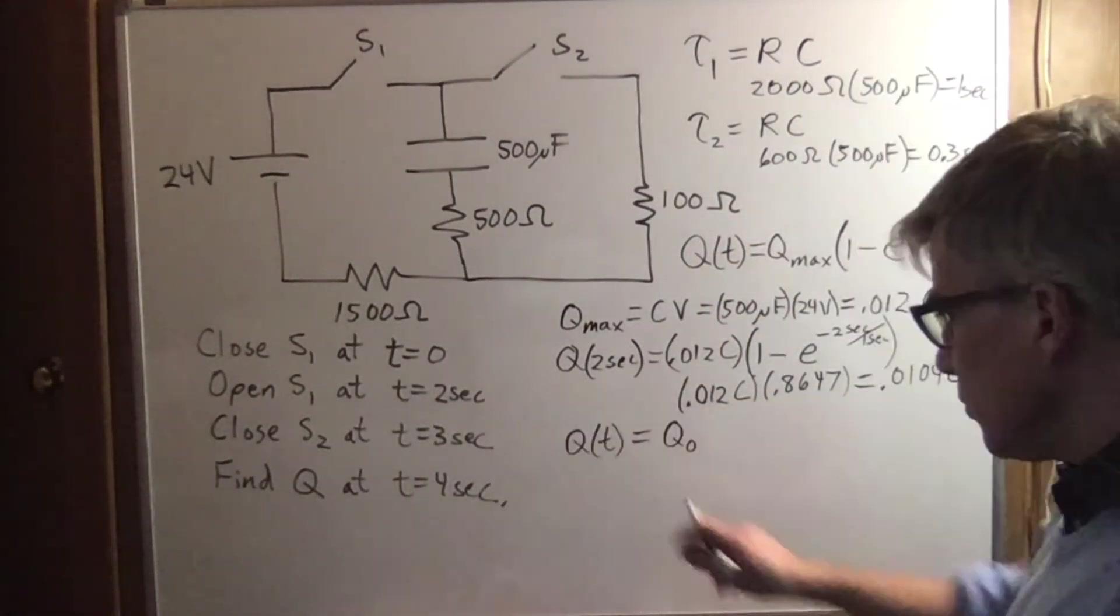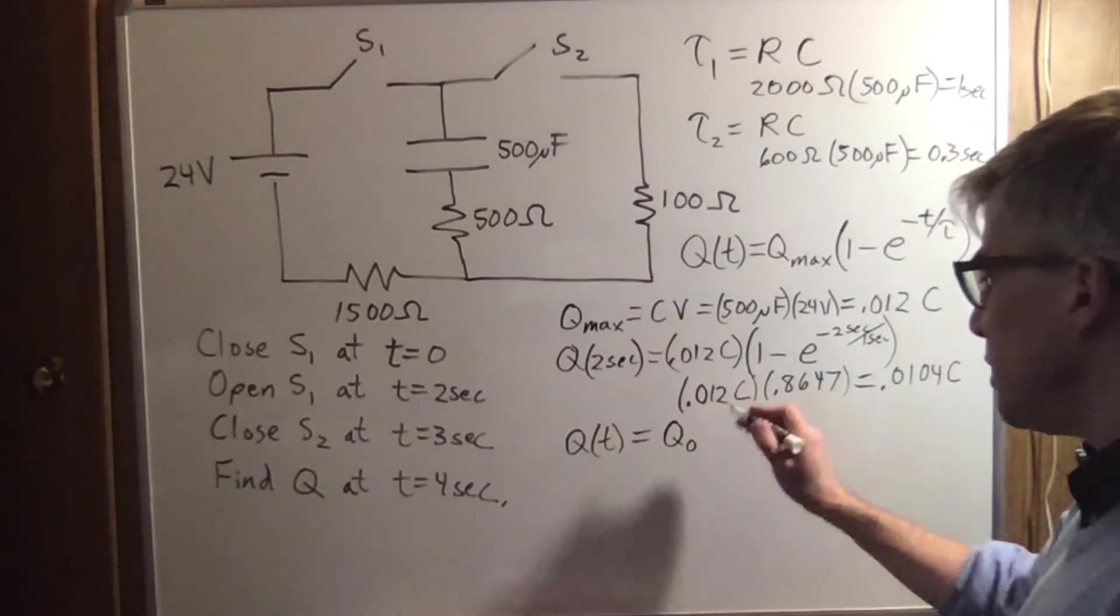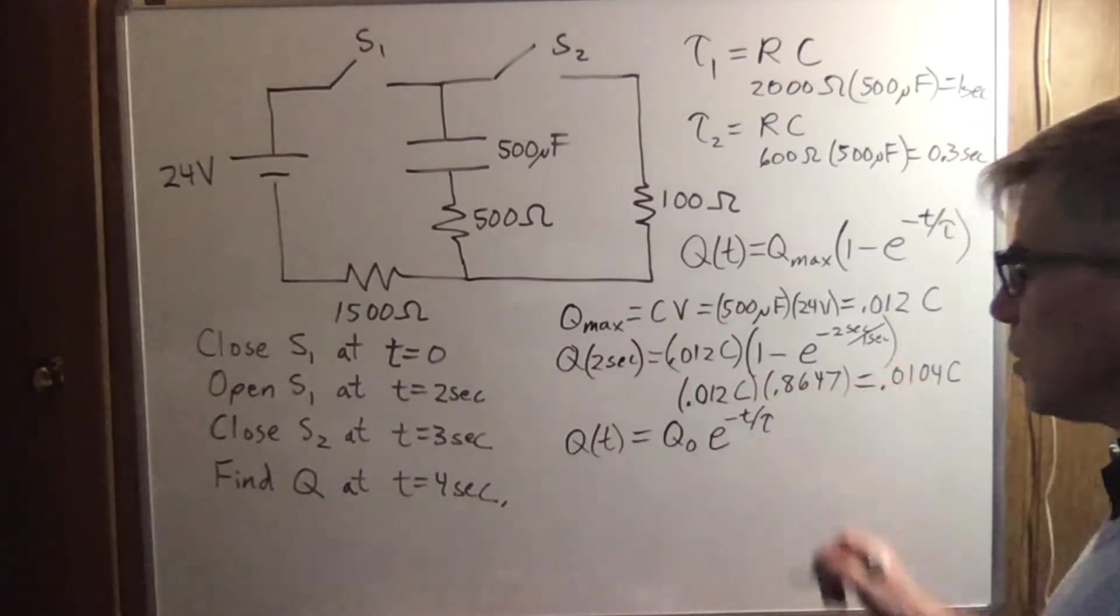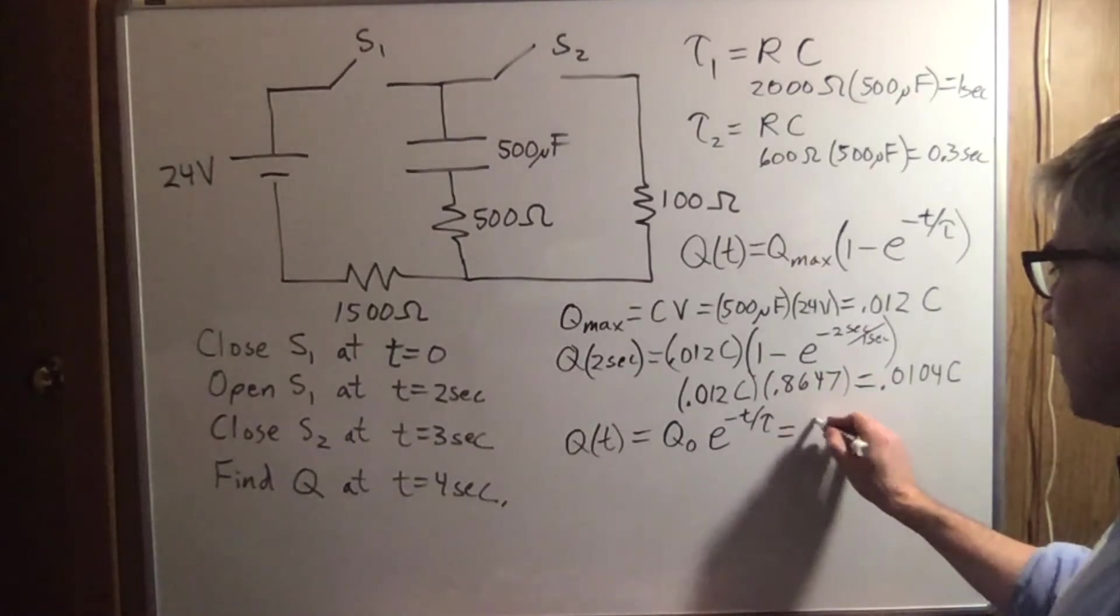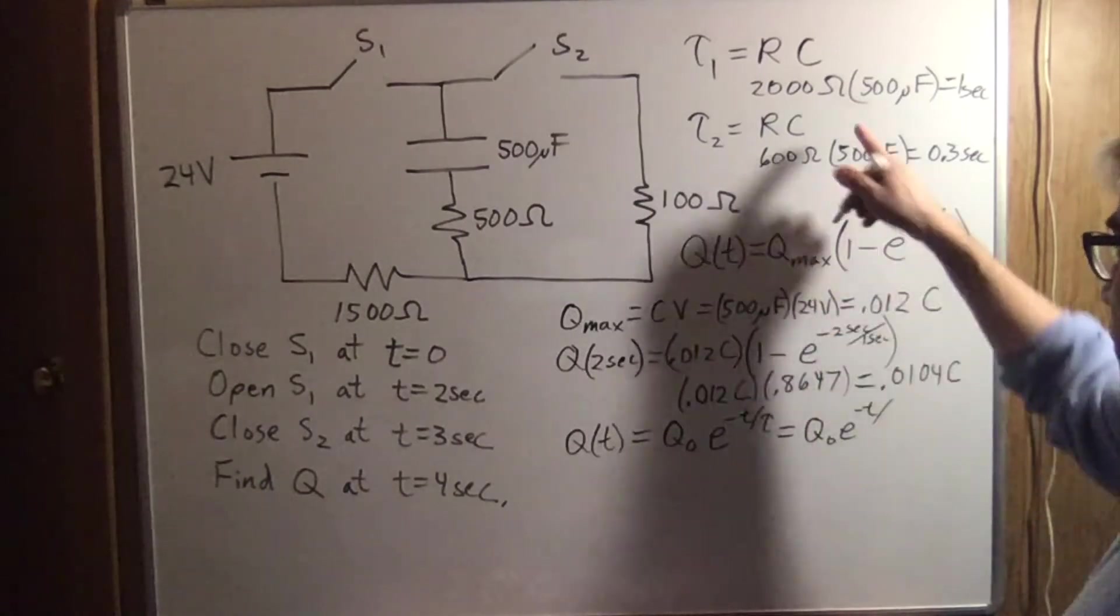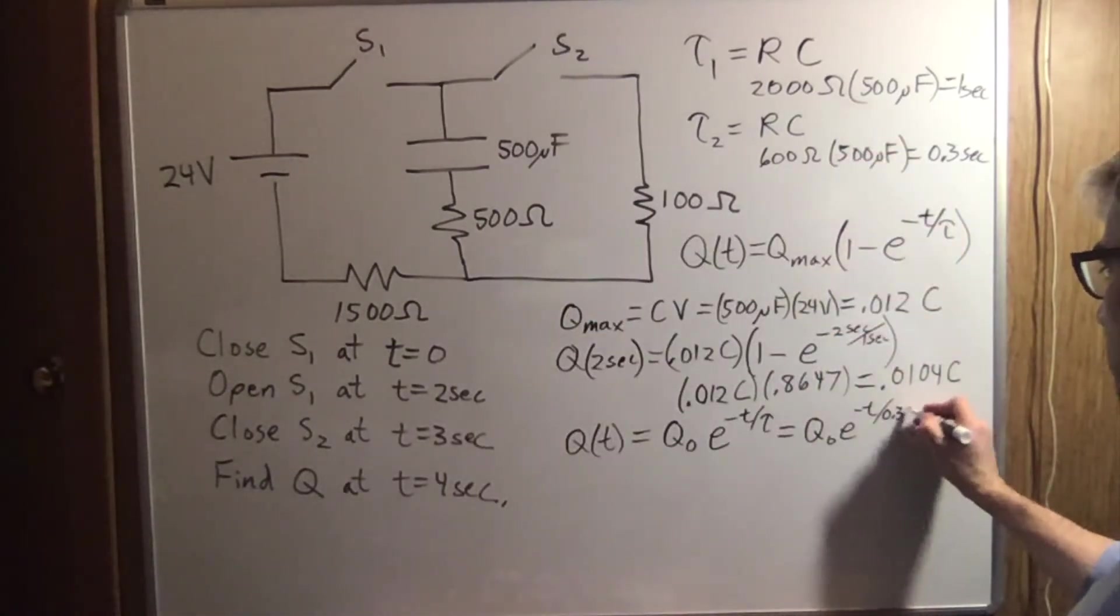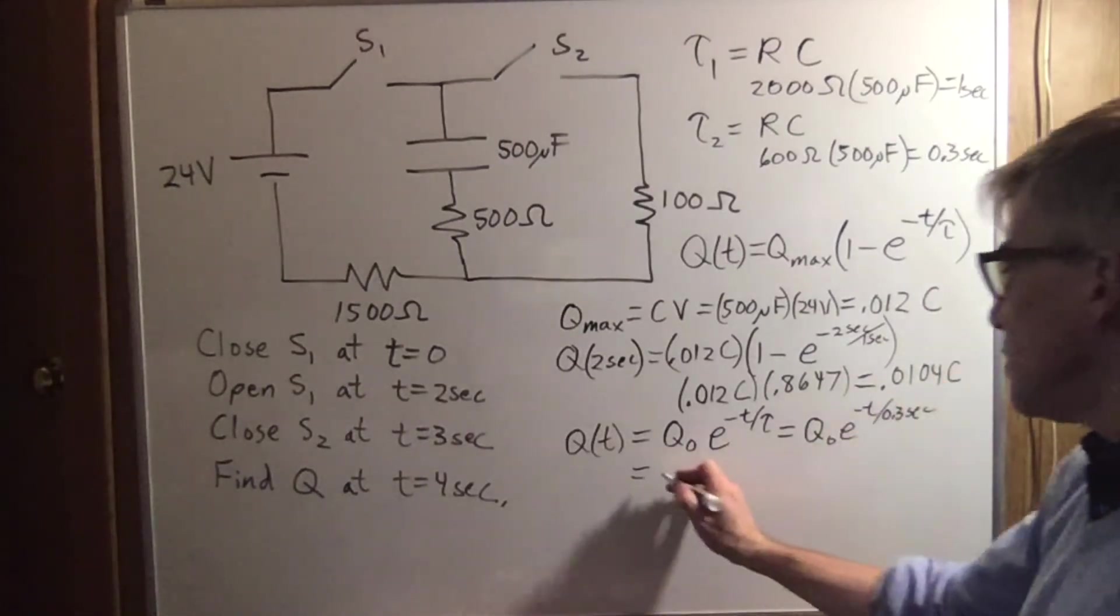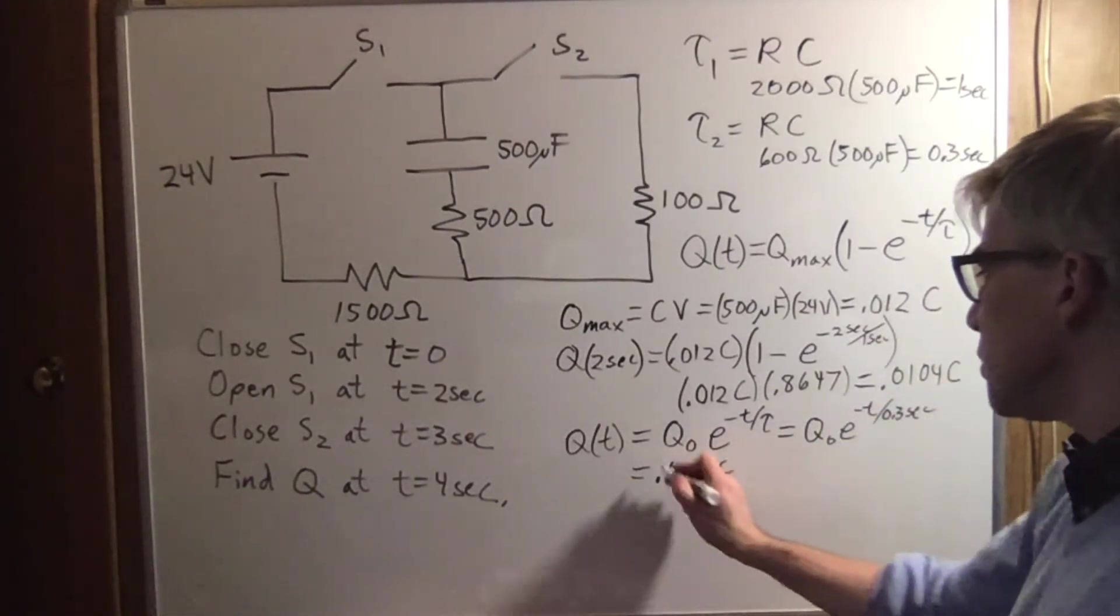And for discharging, the q at a time t is going to be q0 times e to the negative t over tau. So now we're going to have q0 e to the negative t over the new time constant is 0.3 seconds. The q0 is this 0.0104 coulombs.